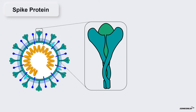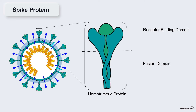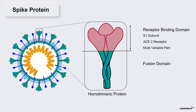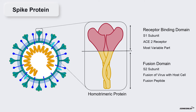The spike protein is the most prominent feature of the viral particle. It is a homo-trimeric protein, meaning it is a group of three of the same proteins that come together to form each of these structures on its surface. It has two domains: the upper receptor binding domain and the lower fusion domain. The upper globular receptor binding domain, also known as the S1 subunit, recognizes the ACE2 or angiotensin converting enzyme 2 receptor, and is the most variable part of the coronavirus genome. The lower fusion domain, also known as the S2 subunit, mediates the fusion of virus and cellular membranes, with a fusion peptide present in its center. Spike proteins are the main targets of neutralizing antibodies; therefore, almost all vaccine efforts focus on generating neutralizing antibodies against spike proteins.